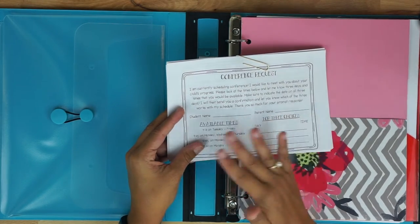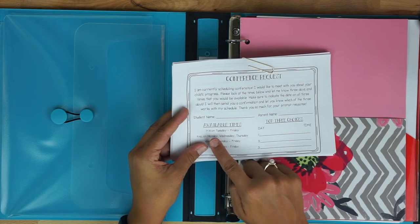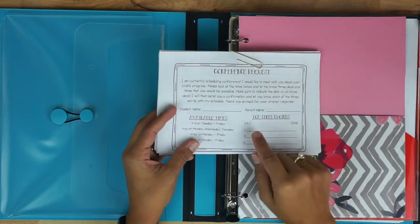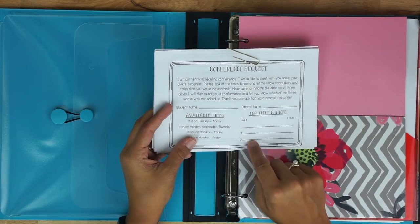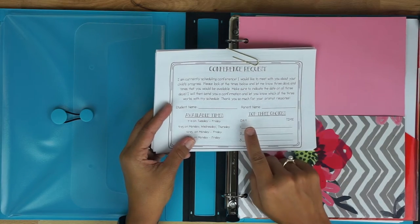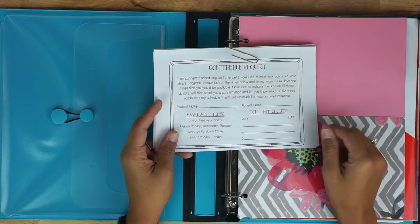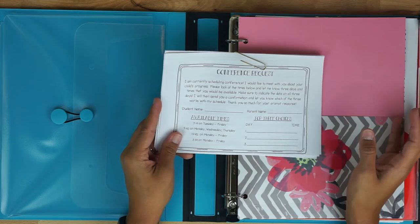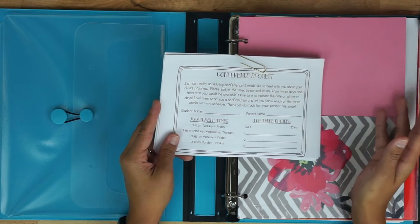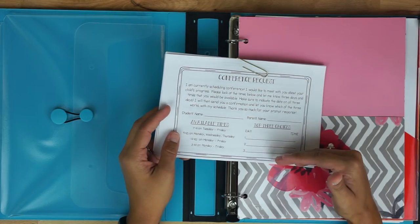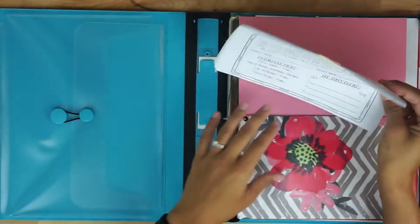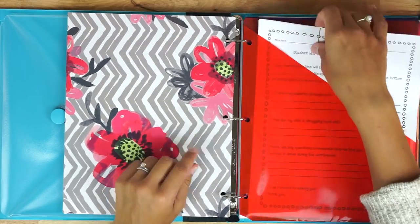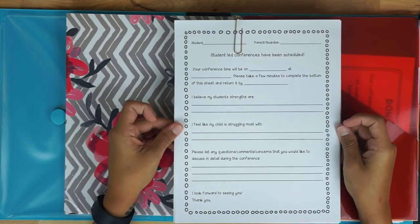They are going to put their child's name here their name here and then I give them times that I'm available on certain days. Tuesday Friday I'm available at 7:10, Monday Wednesday Thursday I was available at 9:45 and so on. So then they'll write their three different choices they have the day here and then they will provide me with the time. So once I get this back then I can go ahead and schedule the conference based on who I received back first and what I have available in my calendar.